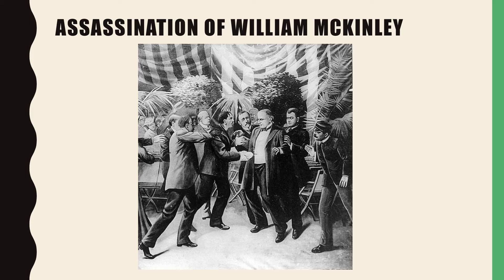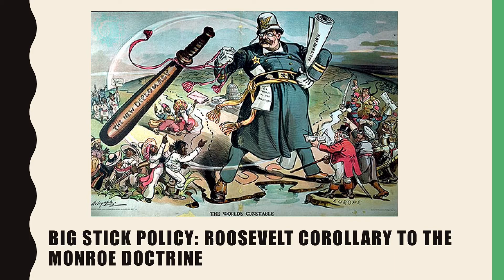William McKinley easily wins re-election in 1900, and in just a few months he is assassinated by an anarchist, Leon Czolgosz, which shocked the United States. His vice president — Theodore Roosevelt — becomes president. You should know that McKinley did not die immediately; he is assassinated but dies a few days later due to gangrene from the bullets. And now Theodore Roosevelt is president of the United States.